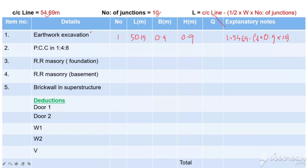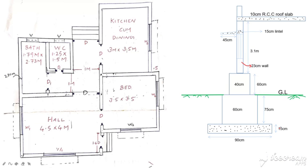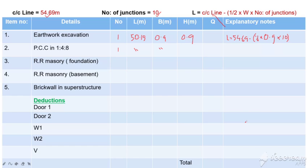For earthwork excavation, then PCC — PCC uses the same length we have already done. We have a 1:3 quantity for PCC, so the length is the same. The length is 0.15.